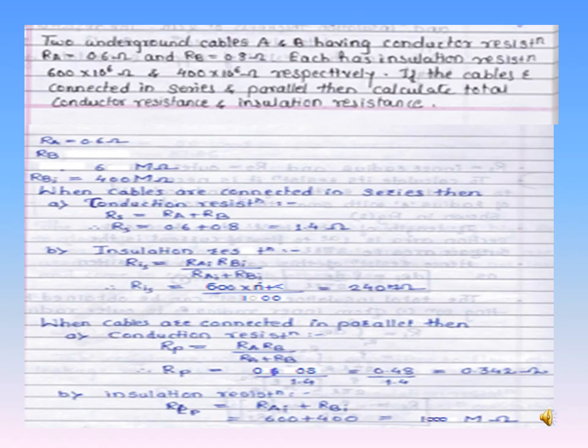This slide shows a typical example on underground cables. Cable A has conductor resistance RA = 0.6 Ω and insulation resistance = 600 MΩ. Cable B has conductor resistance RB = 0.8 Ω and insulation resistance = 400 MΩ. We are asked: if these cables are connected in series and in parallel, what are the resultant conductor resistance and insulation resistance? An important point: when cables are connected in series, their conductor resistances are in series but their insulation resistances appear in parallel.